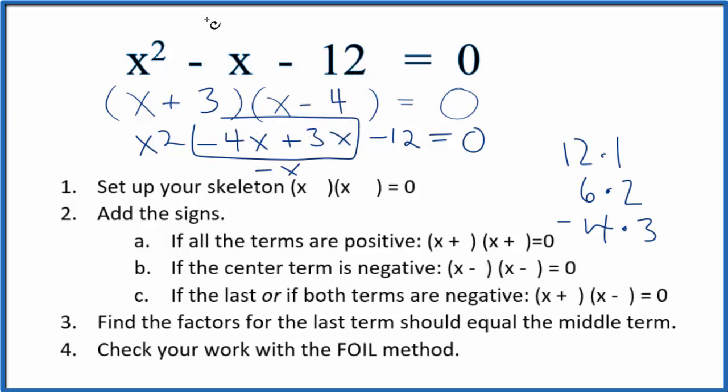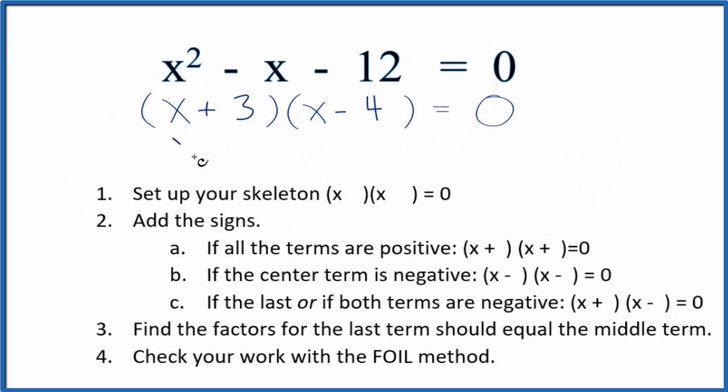Now we'll find the solutions that'll make this entire side of the equation equal 0 and make this a true statement. We could say x + 3 = 0. Subtract 3 from both sides, x = -3. Over here, we could say x - 4 = 0. Add 4 to both sides, x = 4.